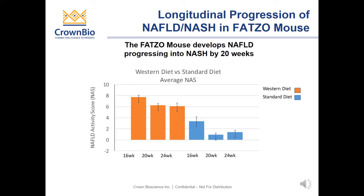Here we quantified the NAFLD activity score. On average, the Western diet compared to the standard diet showed a greater NAFLD activity score as early as 16 weeks of age. This was significantly greater throughout 20 and 24 weeks of age.